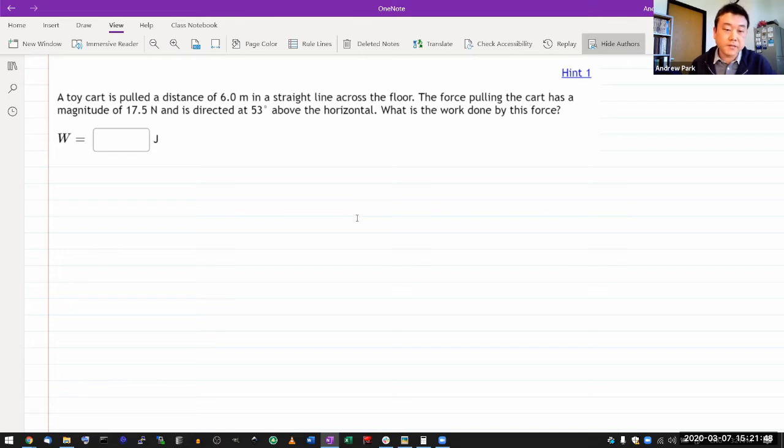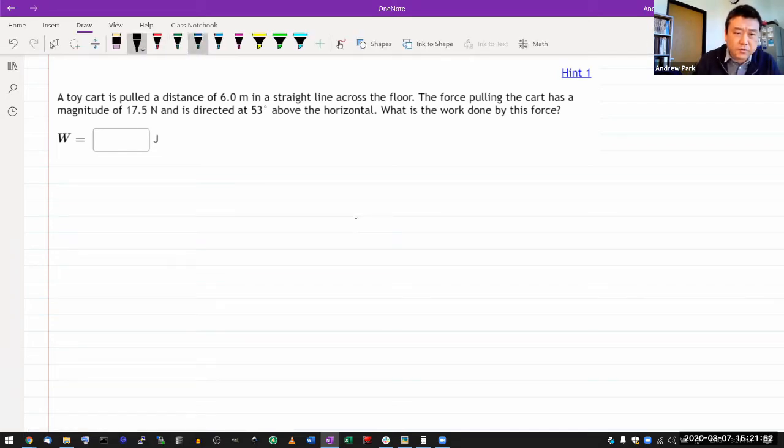A toy cart is pulled a distance of 6.0, let me just introduce symbols I'm gonna use. Distance D meters, in a straight line across the floor. The force pulling the cart has some magnitude, let me use letter F, and is directed at some theta above the horizontal. It's asking what is the work done by this force.